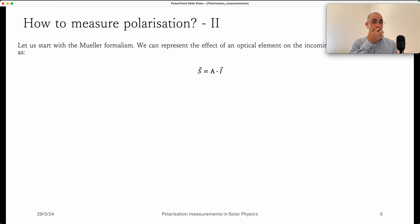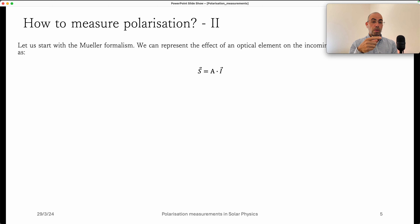The idea is that we are going to use a polarimeter to translate the polarization information into something the sensor can read. Let's start with the key element for understanding the whole process: the Mueller formalism. Light coming in — the four Stokes parameters from the Sun — when it passes through a certain optical medium, that medium will perturb the incoming light. The output Stokes vector will equal the input Stokes profiles multiplied by what we call the Mueller matrix of that optical element.